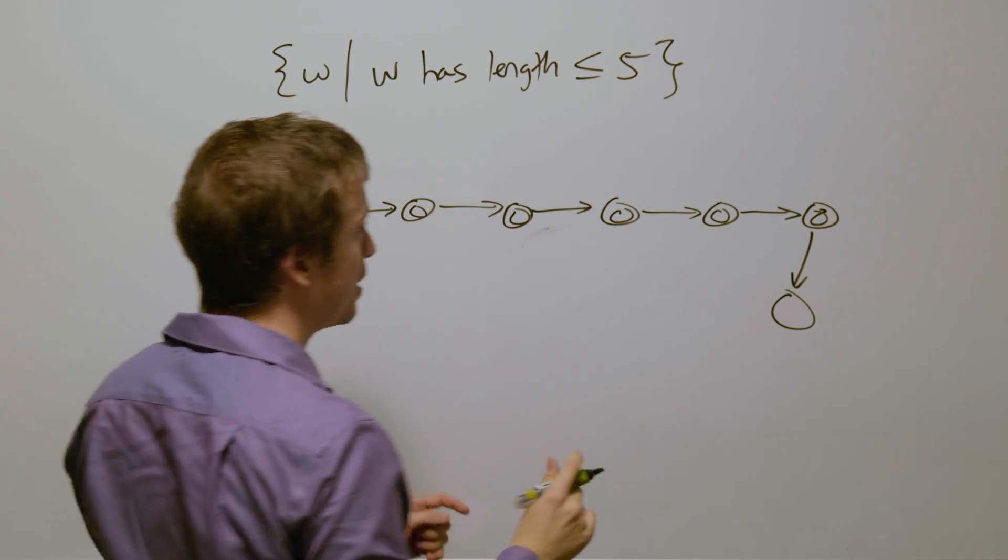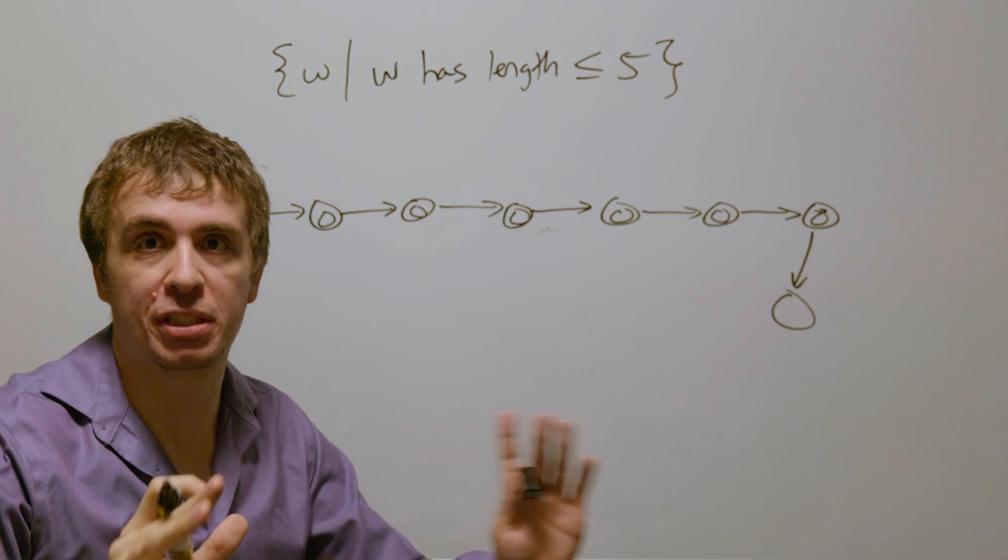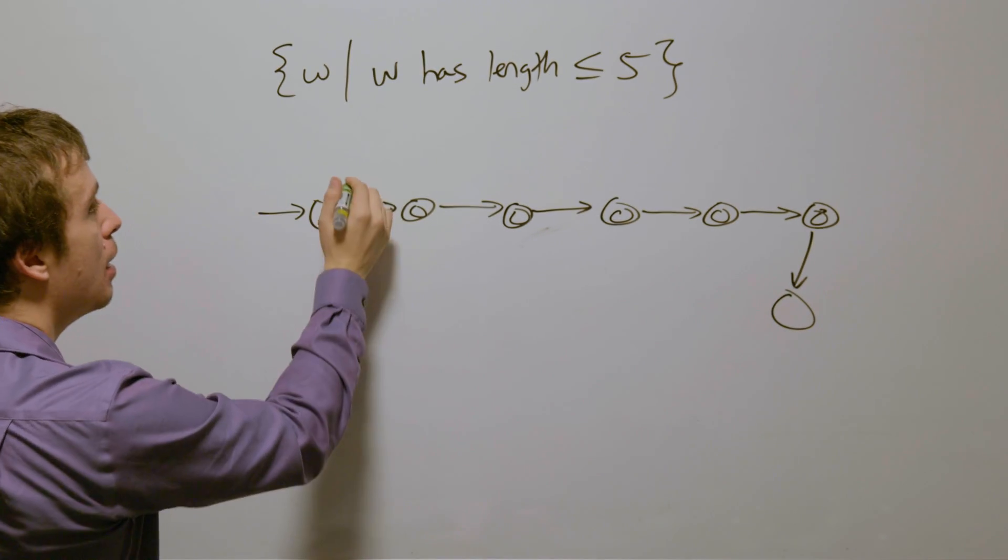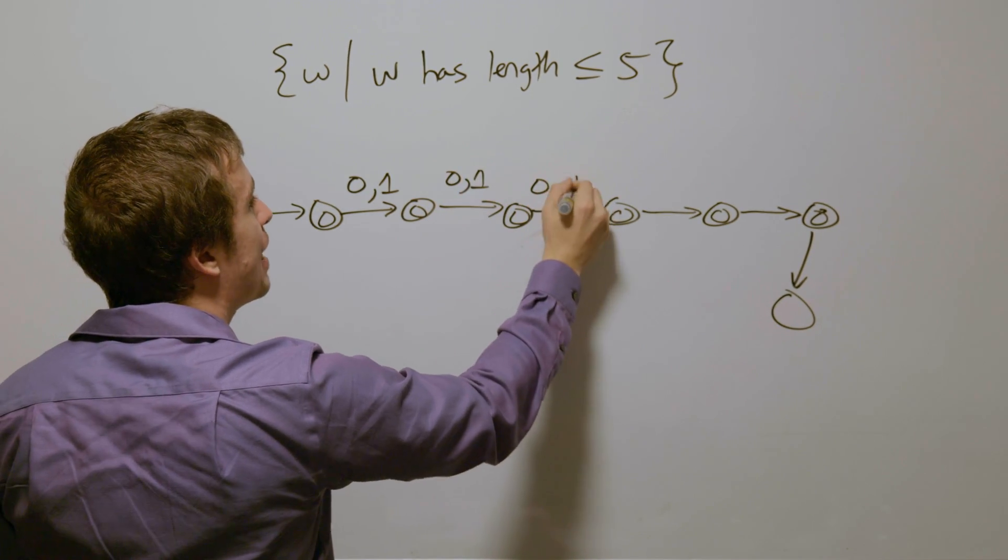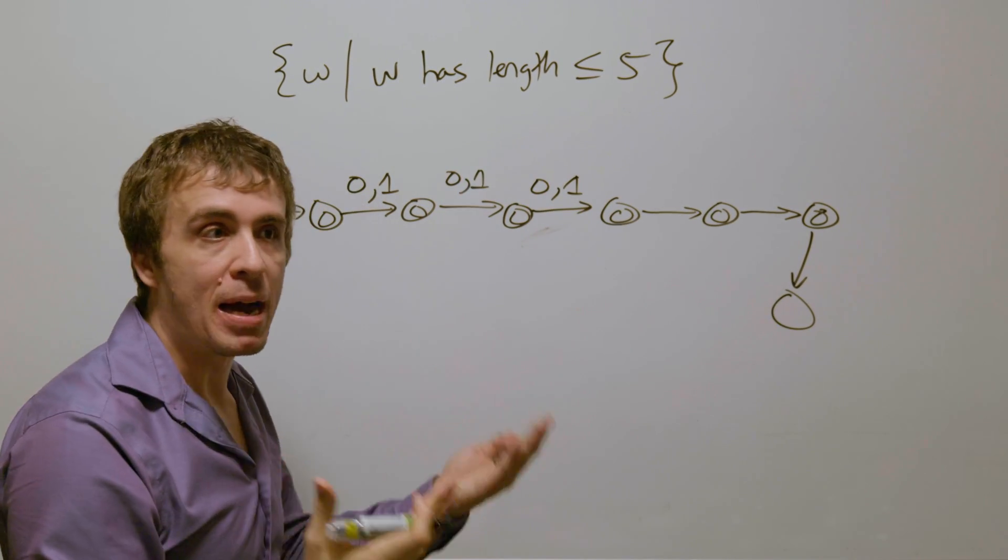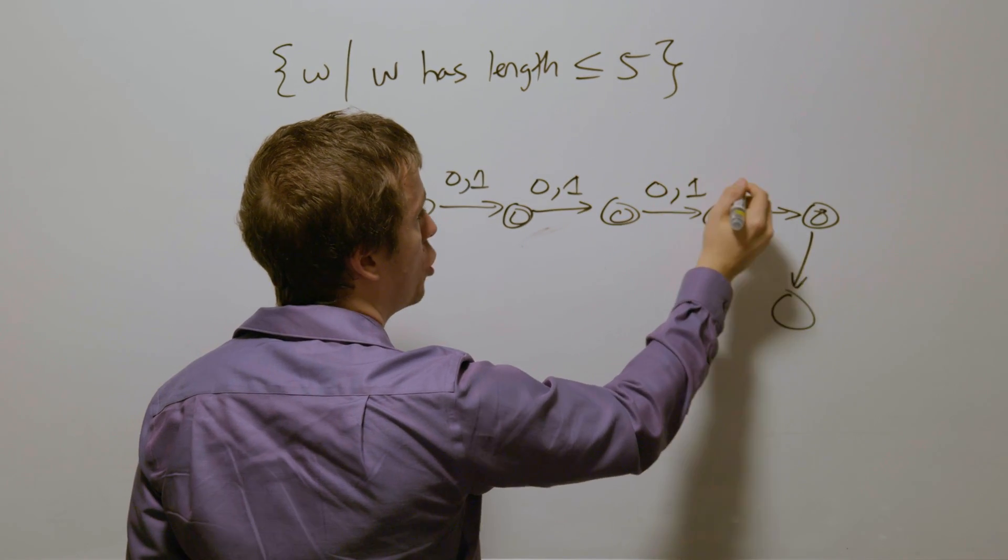And coupled with the fact that we do not care what the actual characters are, just that we have five or fewer of them, I'm going to have all of these be either zero or one. And we can even extend this to any non-binary alphabet if we wanted to, just by adding more things on each transition.